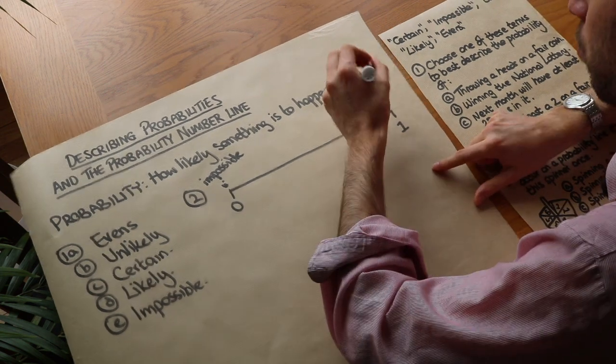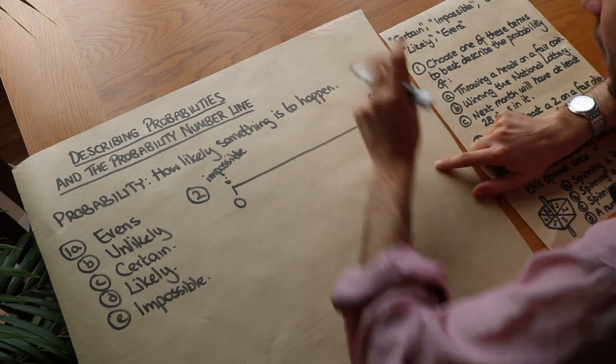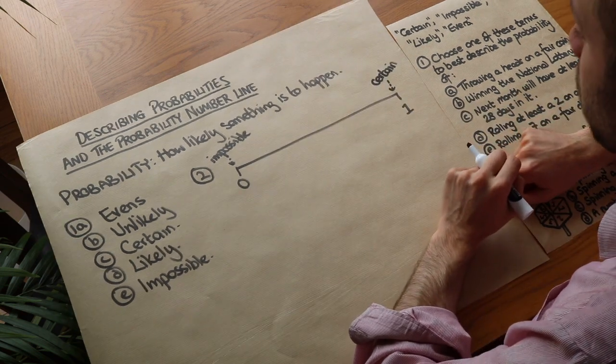And if something has a probability of 1, then it's absolutely certain to happen. So that's the maximum value you can have for probability, a value of 1.